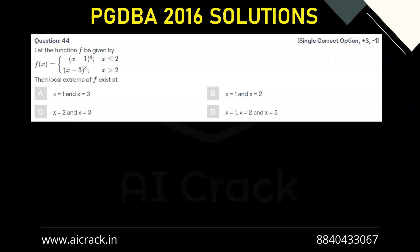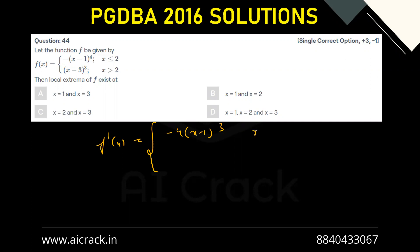Hi everyone. Let's solve question number 44. The function f be given by f(x) equals this piecewise function, and we have to find out the local extrema. First of all, we'll calculate f'(x): we get minus four times (x minus one) raised to the power three for x less than or equal to two, and three times (x minus three) raised to the power two for x greater than two.